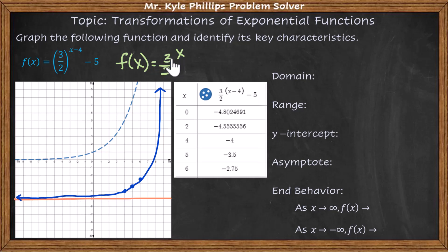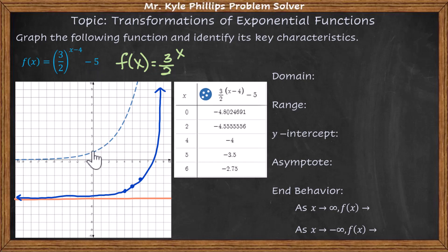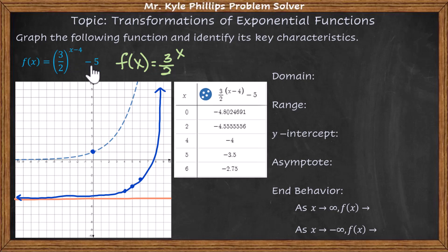From our parent graph, we can see what happened. This minus four moved these values four places to the right, and the minus five moved them five places down. So we have our horizontal movement and our vertical movement.